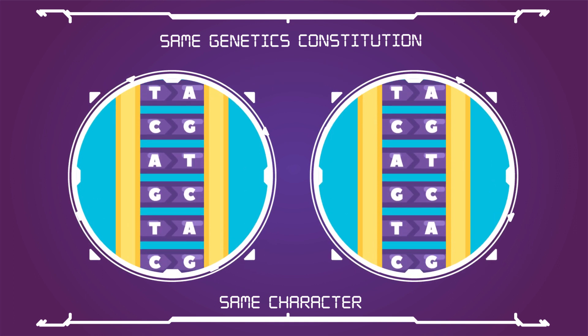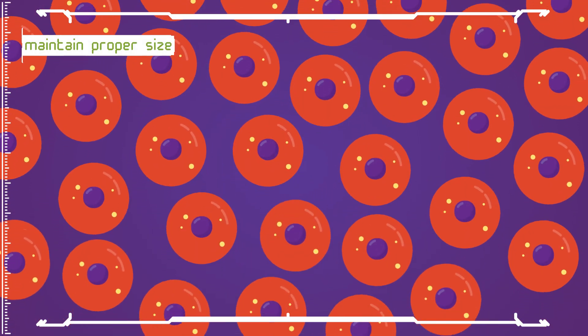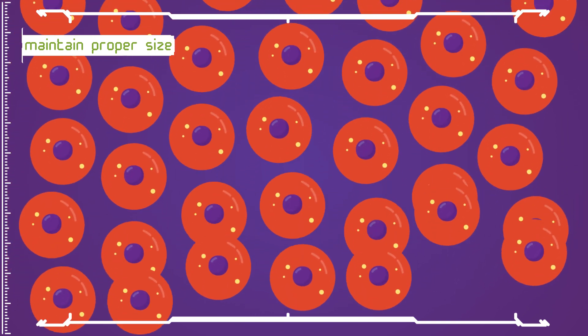Mitosis helps in restoring wear and tear in body tissues, replacement of damaged or lost parts, healing of wounds, and regeneration of detached parts as in the tail of lizards. It is a method of multiplication in unicellular organisms.